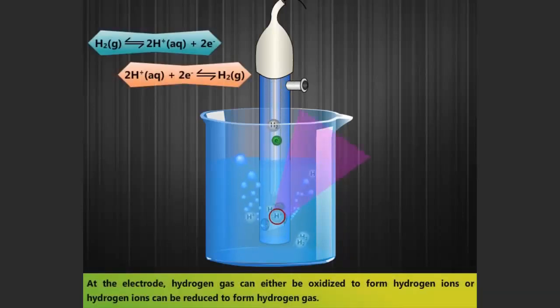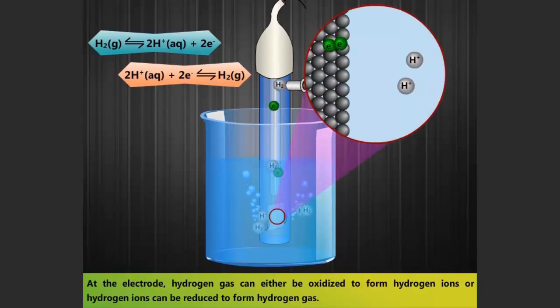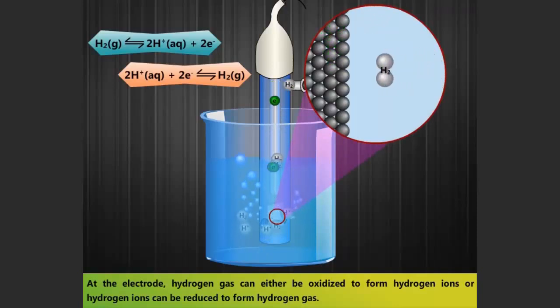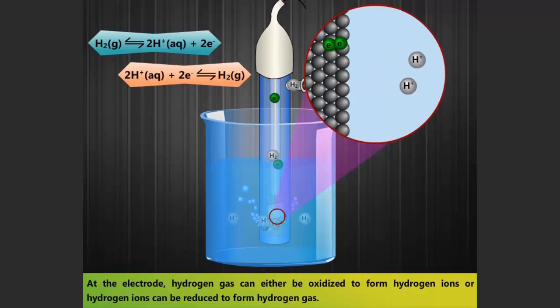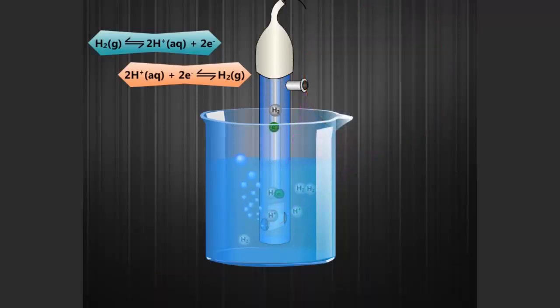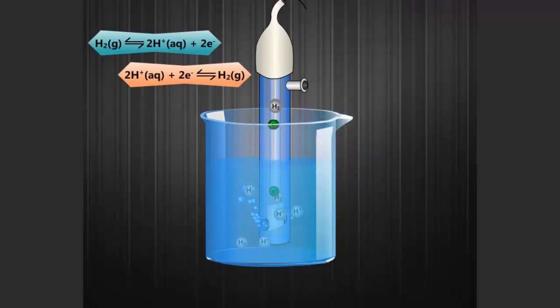At the electrode, hydrogen gas can either be oxidized to form hydrogen ions, or hydrogen ions can be reduced to form hydrogen gas. Hence, two reactions are possible at the electrode.